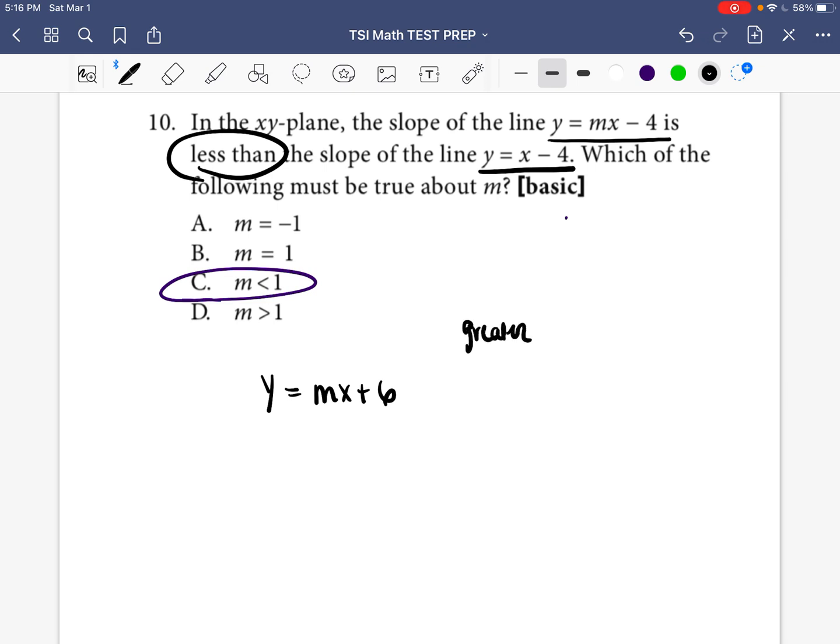If they said the slope of line y is equal to mx plus 6 is greater than, so we're going to write greater than the slope of y is equal to negative 3x plus 10. Again, I would just write the slope of the first line, which is whatever number or letter is in front of the x. In this case,